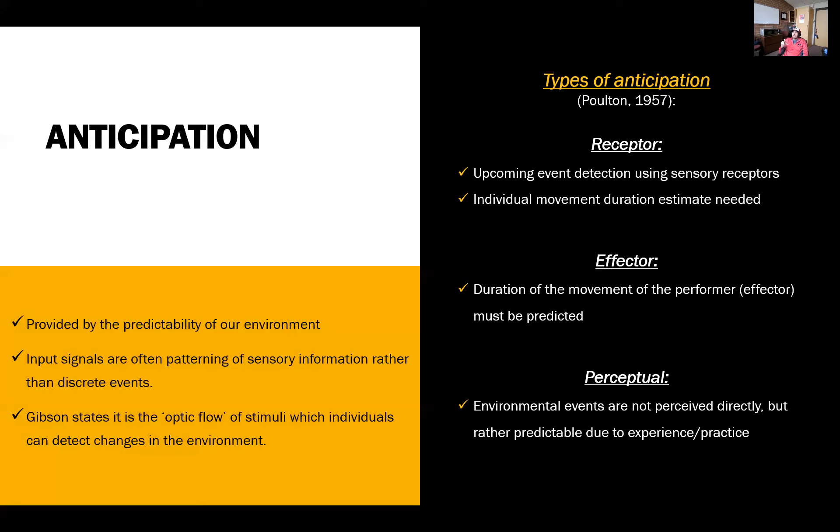Simply, we get to a more reduced motor pattern and processing programming in that third stage of information processing. The effector is anticipating the stimulus coming in and predicting how long that movement pattern is going to take. Then perceptual anticipation involves environmental events that are not perceived directly but rather predicted via experience and practice. Think about marching and rhythm and things that have beats to them, a particular cadence that we know—those are more of the perceptual.